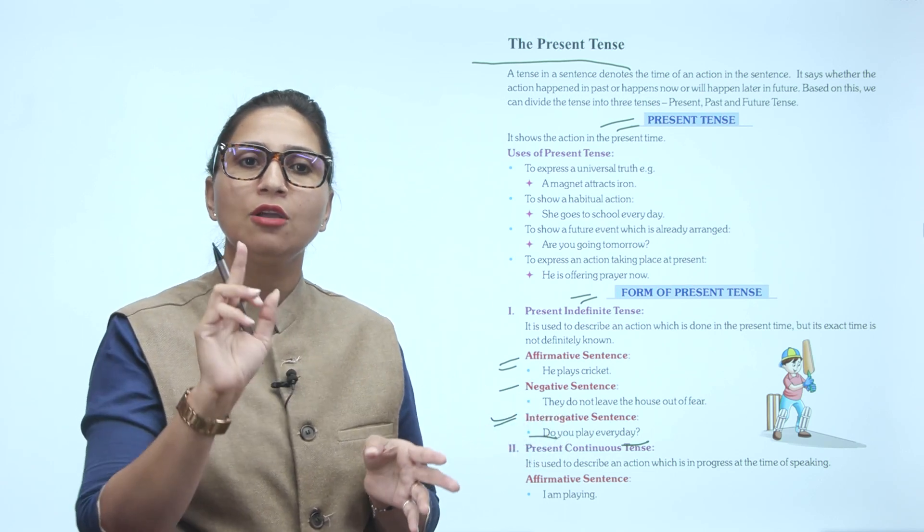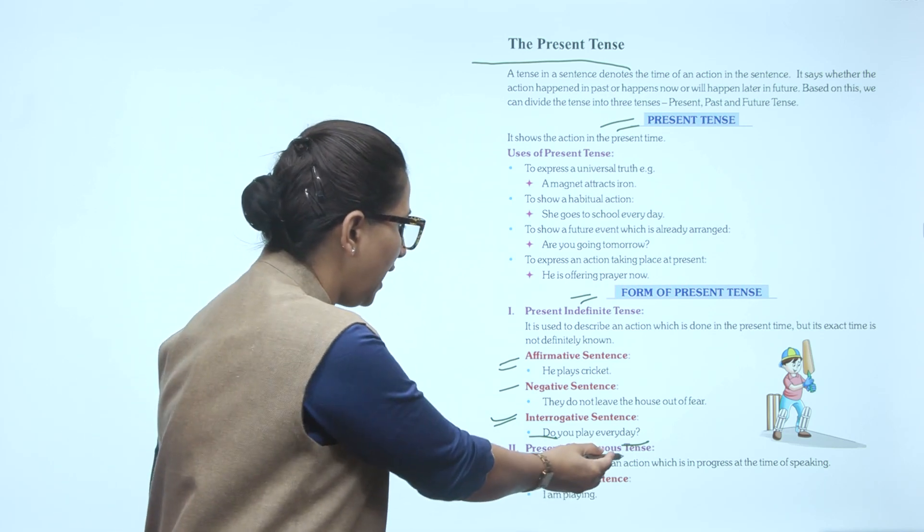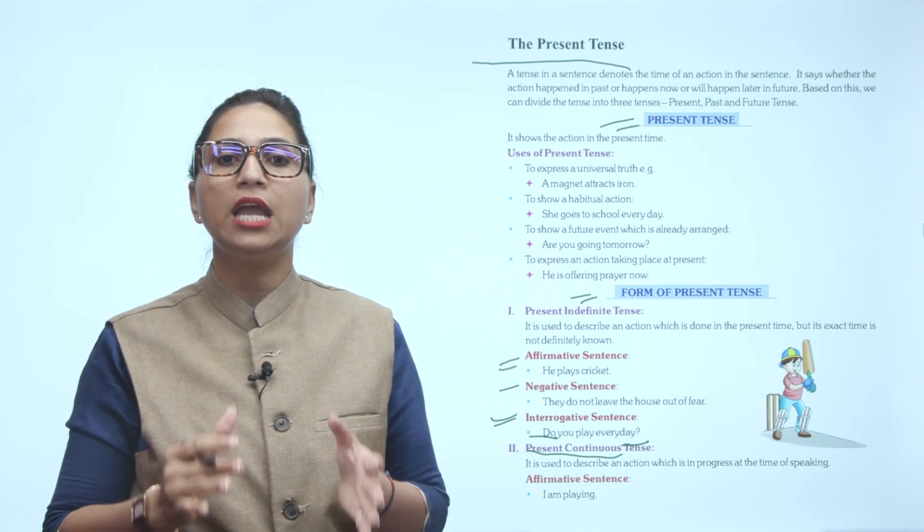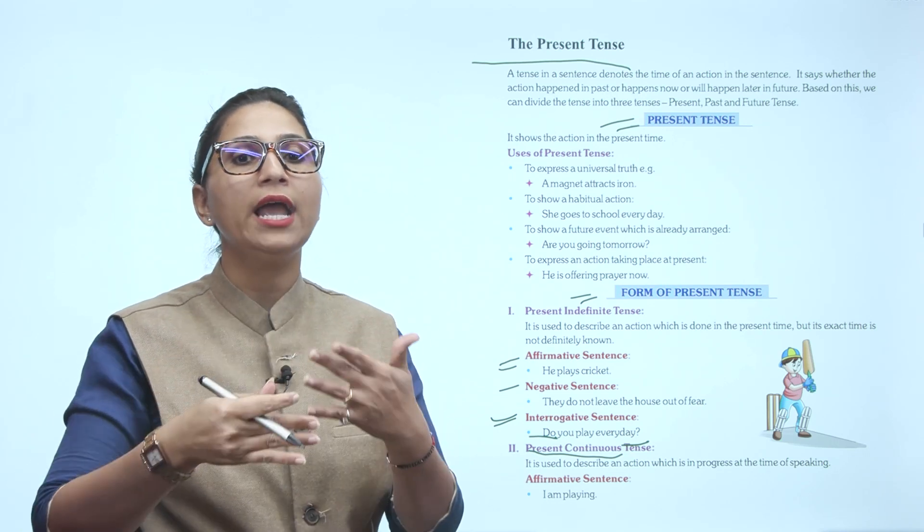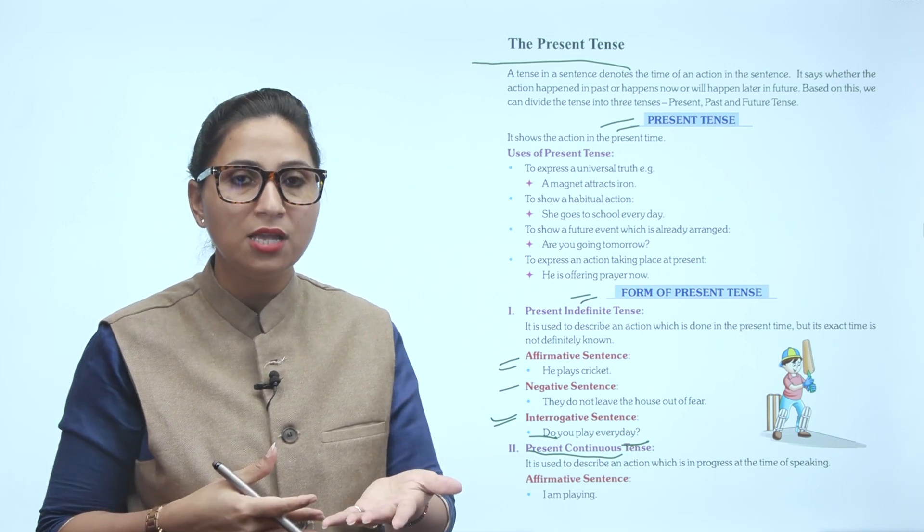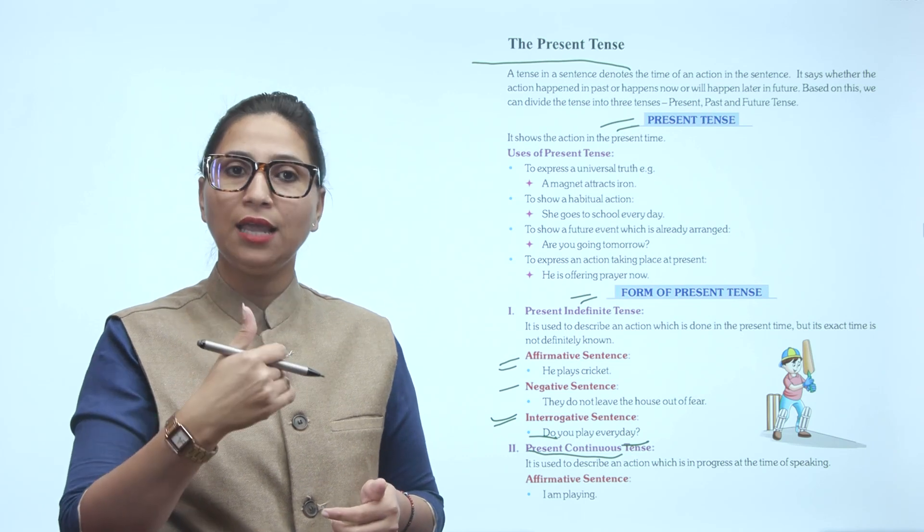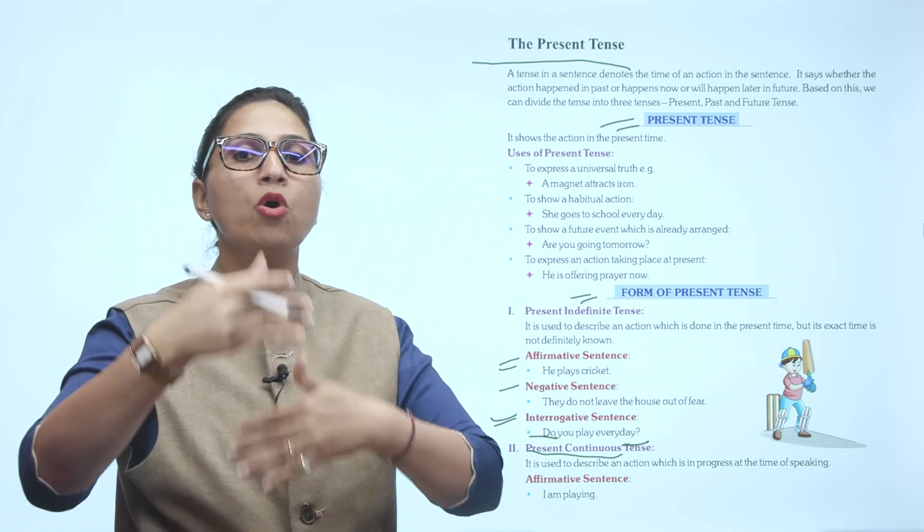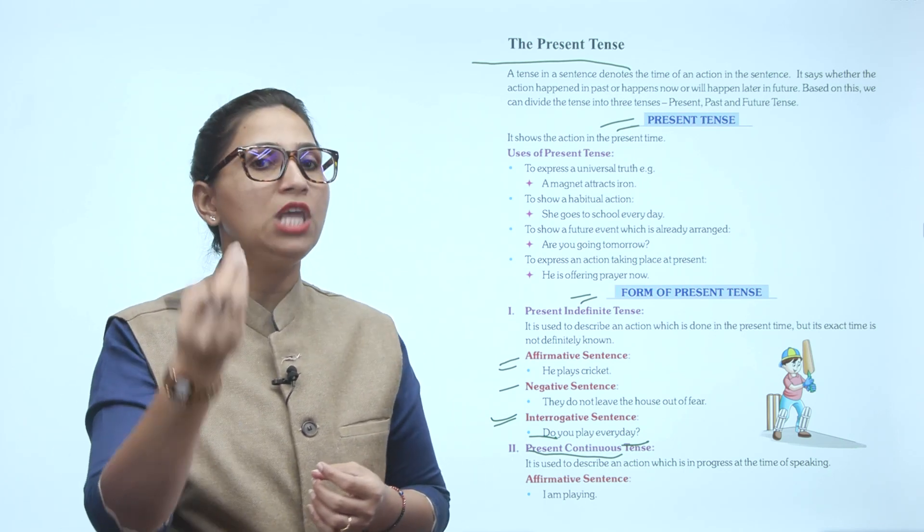Next is Present Continuous Tense. It is used to describe an action which is in progress at the time of speaking. What is happening at that time - the action is progressing, continuing. When you are speaking, that action is happening. Example: I am speaking. Right now, in the present time, the action is progressing.